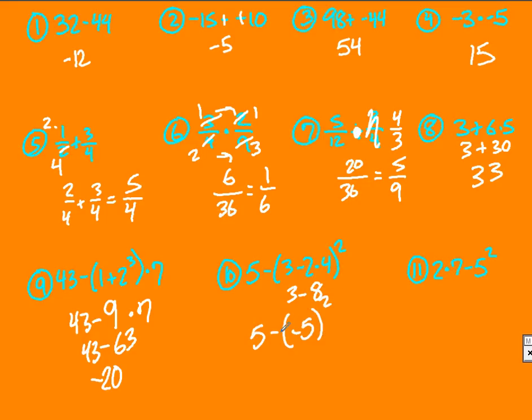5 minus negative 5 squared. Because that negative 5 is in the parentheses, I'm squaring that entire thing. Negative 5 times itself. Negative 5 times negative 5 is positive 25. 5 minus 25, so your answer is negative 20.